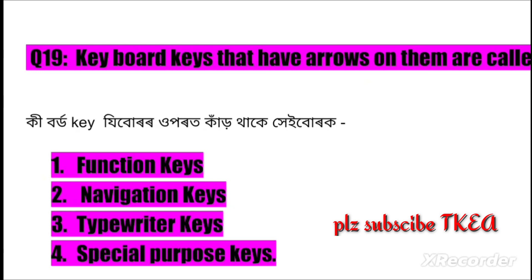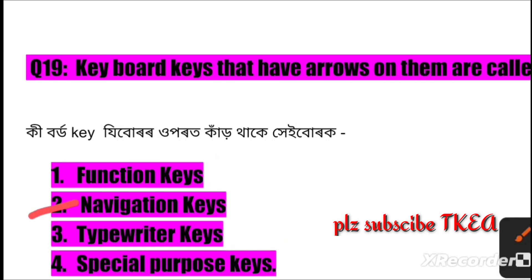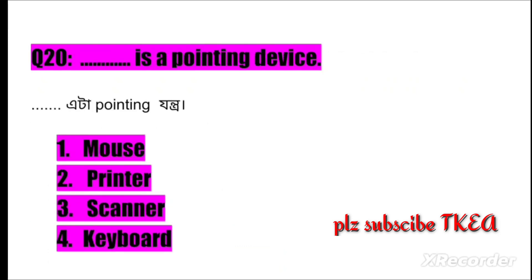Question number nineteen: Keys that have arrows on them are called? Option one: function keys, two: navigation keys, three: typewriter keys, four: special-purpose keys. The right answer is number two: navigation keys. Question number twenty: Which is a pointing device? Option one: mouse, two: printer, three: scanner, four: keyboard. The right answer is number one: mouse.